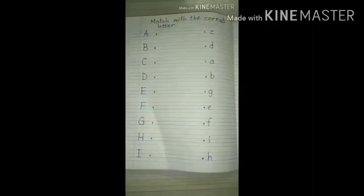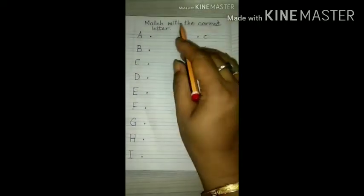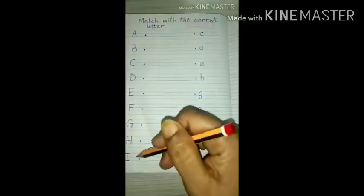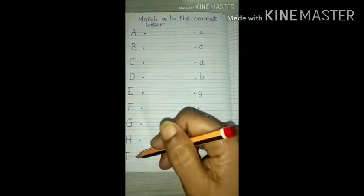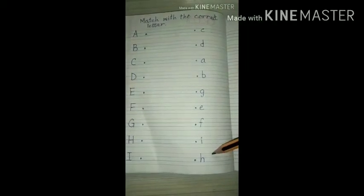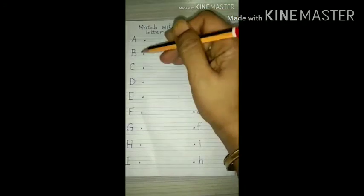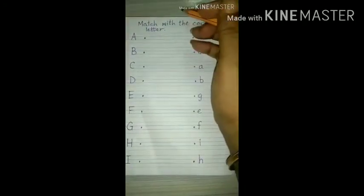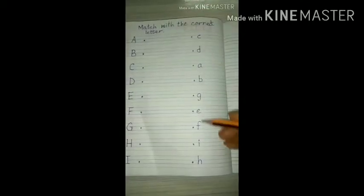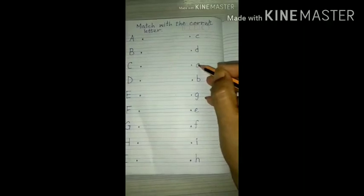See, on the next page, what will we do? Match with the correct letter. See, on this side we have capital letters and on another side we have small letters. So we have to match these letters correctly. Okay, like A. Now find out small letter A on this side. It is here. So we will match it with capital letter C.